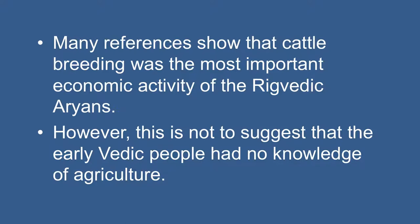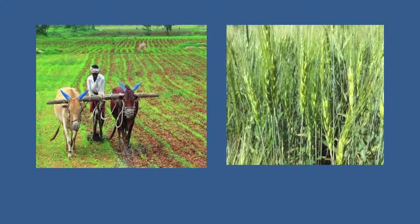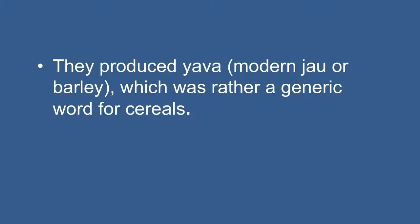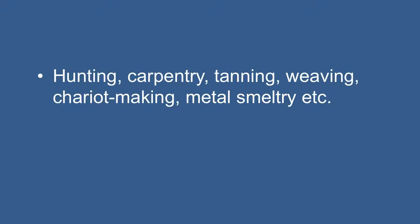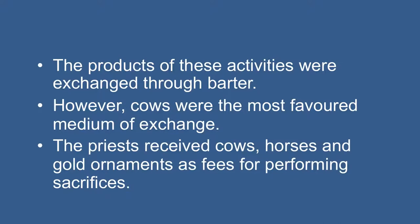However, this is not to suggest that the early Vedic people had no knowledge of agriculture. A few references show that they had knowledge of agriculture and practiced it to supplement their food requirements. They produced Yawa or Barley, which was rather a generic word for cereals. Apart from cattle rearing and small scale cultivation, people were engaged in many other economic activities like hunting, carpentry, weaving, chariot making, and metal smelting. The products of these activities were exchanged through barter. Cows were the most favored medium of exchange. The priests received cows, horses, and gold ornaments as fees for performing sacrifices.